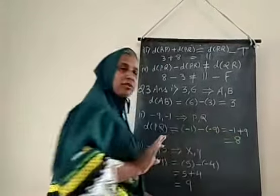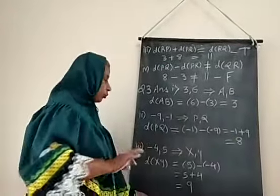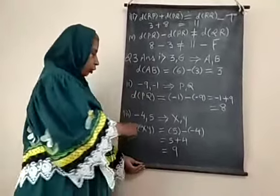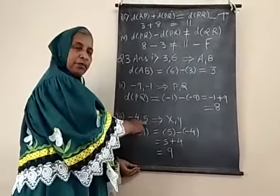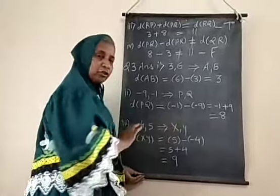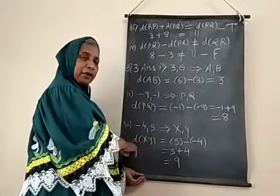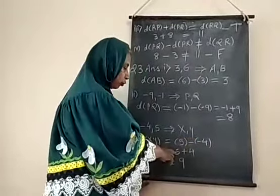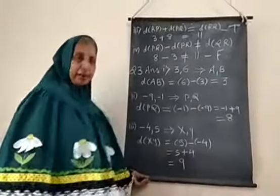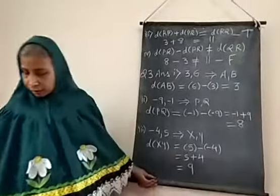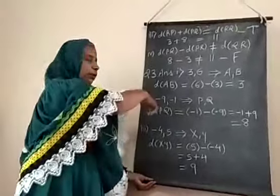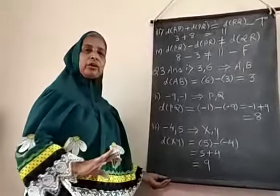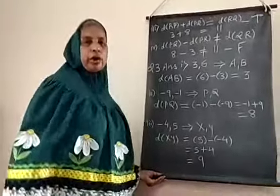In the third sub-question, coordinates minus four and five are given. Let them be X and Y. Distance XY is five minus bracket minus four, so five plus four equals nine. The remaining questions from question number three you should solve yourself — only three answers have been given here.